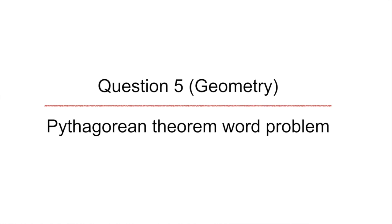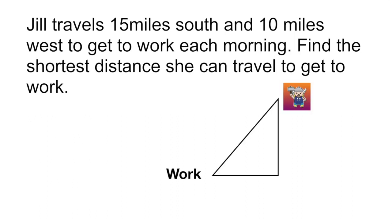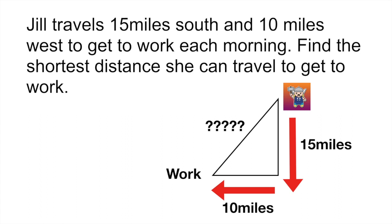The final question is also a geometry question and it's a pythagorean theorem word problem. So I've covered this in another video more extensively. I'll leave a card up on the top right if you want to review that. It says Jill travels 15 miles south and 10 miles west to get to work each morning. Find the shortest distance she can travel to get to work. So that's Jill. She's a Viking and they tell us that she travels 15 miles south and then 10 miles west. And what they're asking is the shortest route or distance to get to work, which would be this other side.